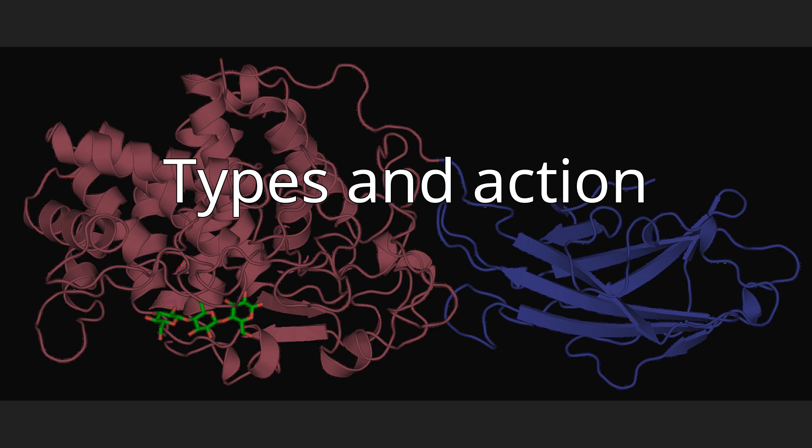Exocellulases or cellobiohydrolases (EC 3.2.1.91) cleave 2 to 4 units from the ends of the exposed chains produced by endocellulase, resulting in tetrasaccharides or disaccharides such as cellobiose. Exocellulases are further classified into type I, which work processively from the reducing end of the cellulose chain, and type II, which work processively from the non-reducing end.